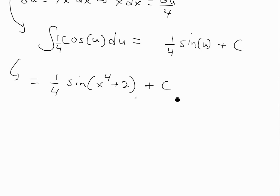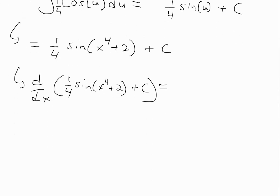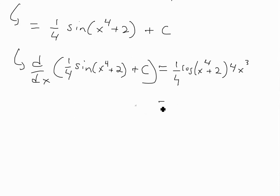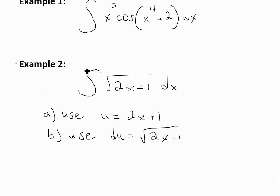You can always double-check by taking the derivative. Taking d over dx of one-quarter sine of x to the 4 plus 2 plus C: the derivative of sine is cosine, giving one-quarter cosine of x to the 4 plus 2. By the chain rule, we multiply by the derivative of the inside, which is 4x cubed. The 4 cancels, leaving x cubed cosine of x to the 4 plus 2 — exactly our starting integrand. I'll box that answer.